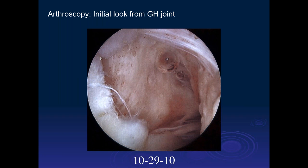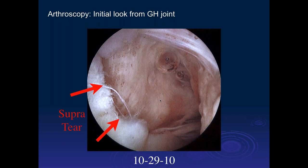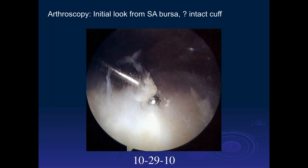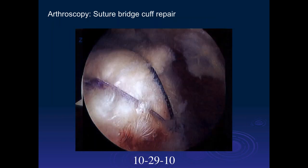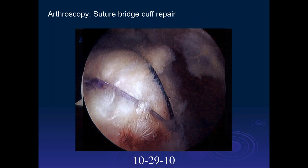The surgeon initially looked in from the glenohumeral joint space. What he saw was the torn tendon — there was a full thickness tendon tear that was retracted. The scar in situ was actually making a watertight seal so that the contrast would not go into the subacromial-subdeltoid bursa. Then he went around and put the scope into the subacromial-subdeltoid bursa, saw some calcification and scar tissue, and confirmed it arthroscopically. They removed the scar tissue and did a primary repair of the tendon. This was surgically proven to be a watertight scar in situ.